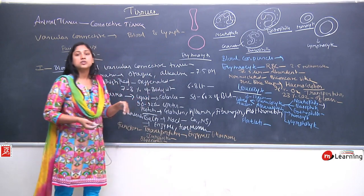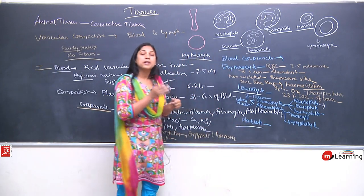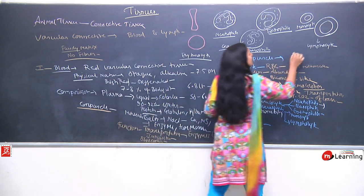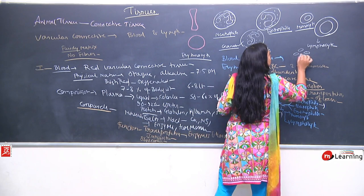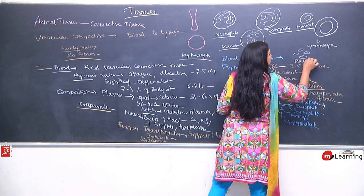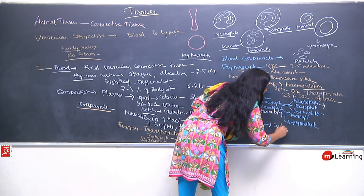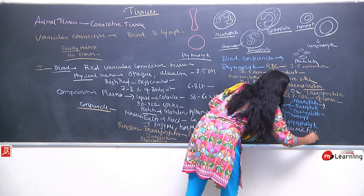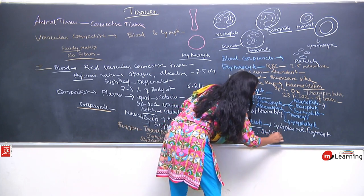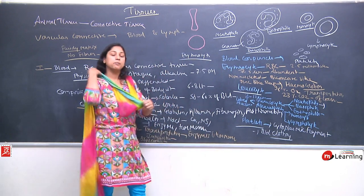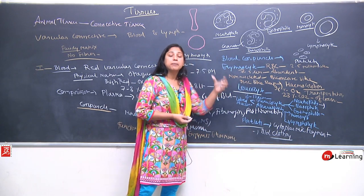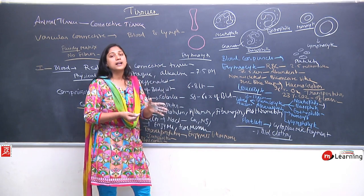The third type of blood cell is platelets, also called thrombocytes. Platelets are cytoplasmic fragments — they are not actual complete cells; they are fragments of a larger cell. Platelets are very small in size and help in blood clotting.